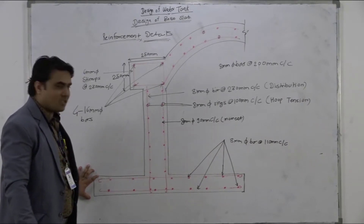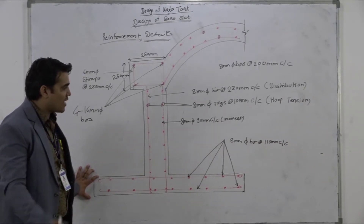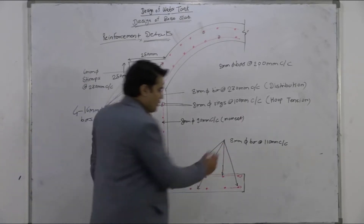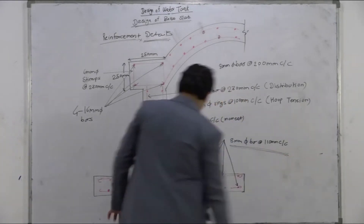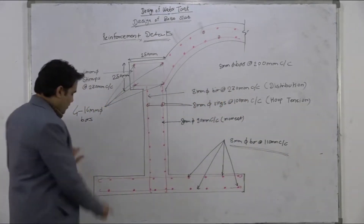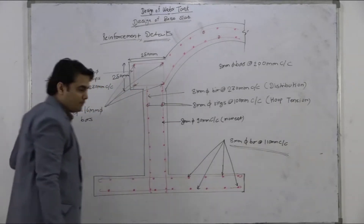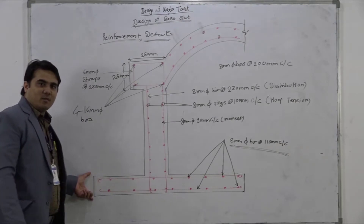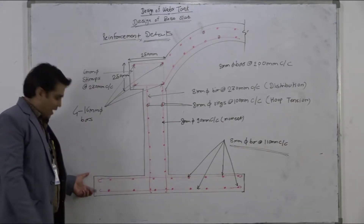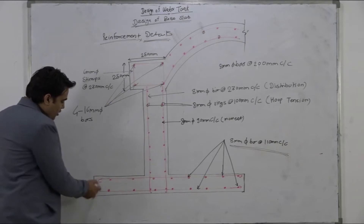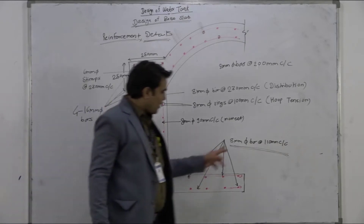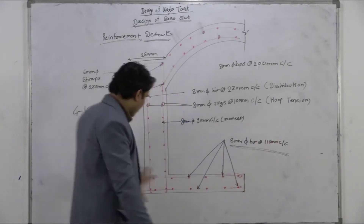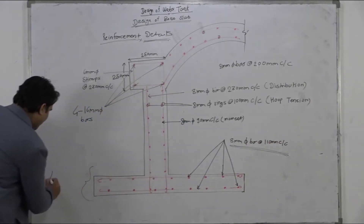In the base slab, we have provided 8 mm diameter bars at 110 mm center to center, distributed on both sides. We calculated the thickness of the base slab, calculated the AST at each face, then divided by 2. So at each face we have provided 8 mm diameter bars at 110 mm center to center. This is all about the base slab.